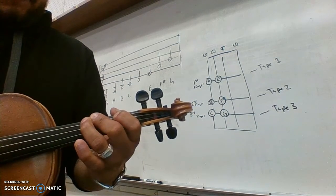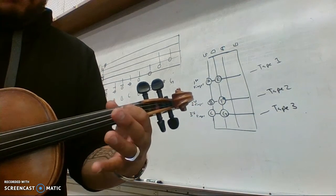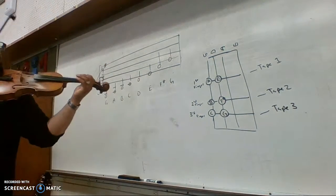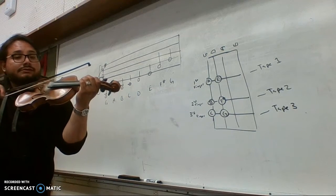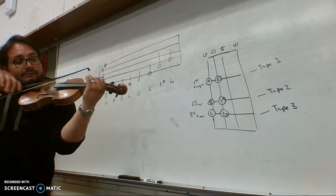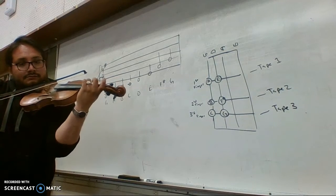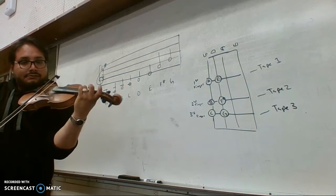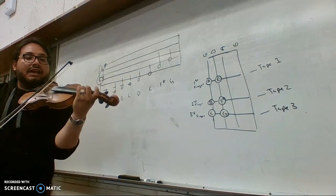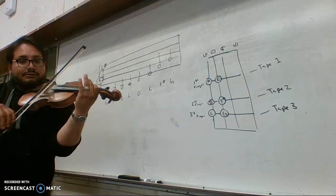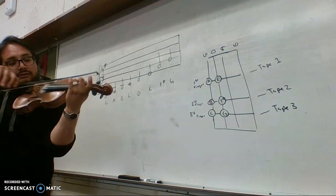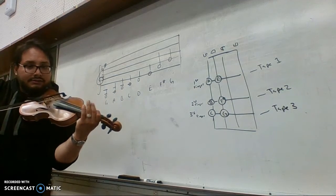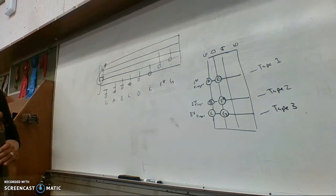Then C, then open D, then first finger E, F sharp, and G. And to play it's going to sound like this. Three, four. [plays scale] G. And that's it, that's the G scale.